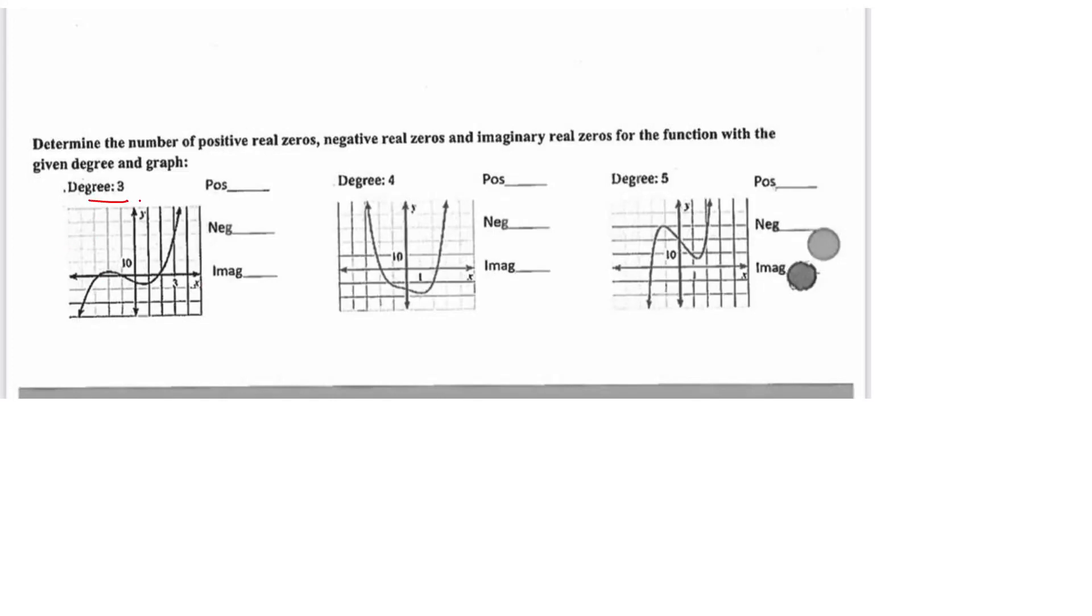Here the degree is 3, that means the graph will cut the x-axis at three different points: the first point, second point, and third point. These two points are lying in the negative x-axis zone, so these two are negative roots. This point is 1 and it is lying on the positive x-axis, so there is one positive root. Here we got three roots and the degree is 3, that means there are no imaginary roots.